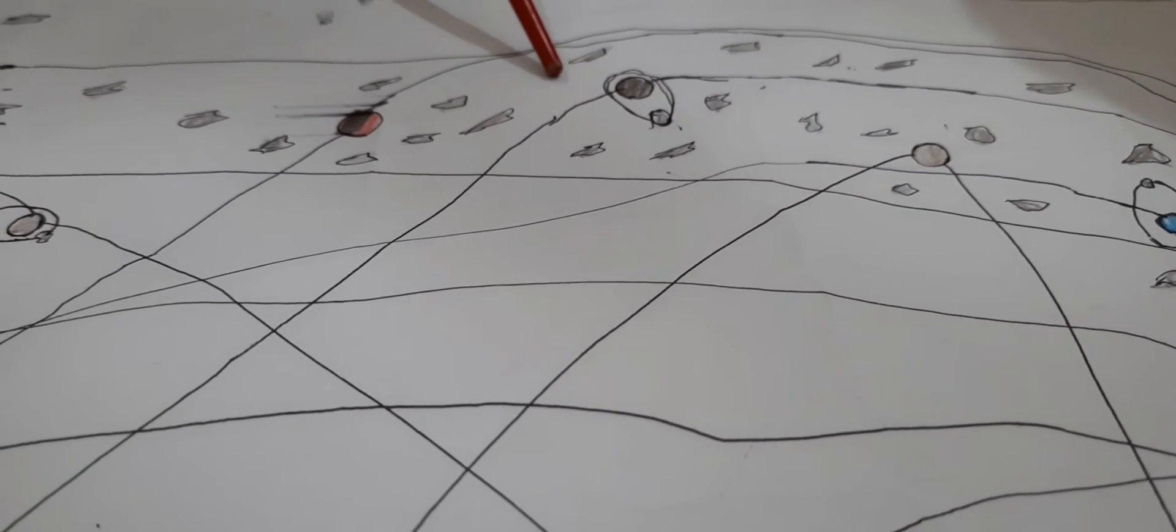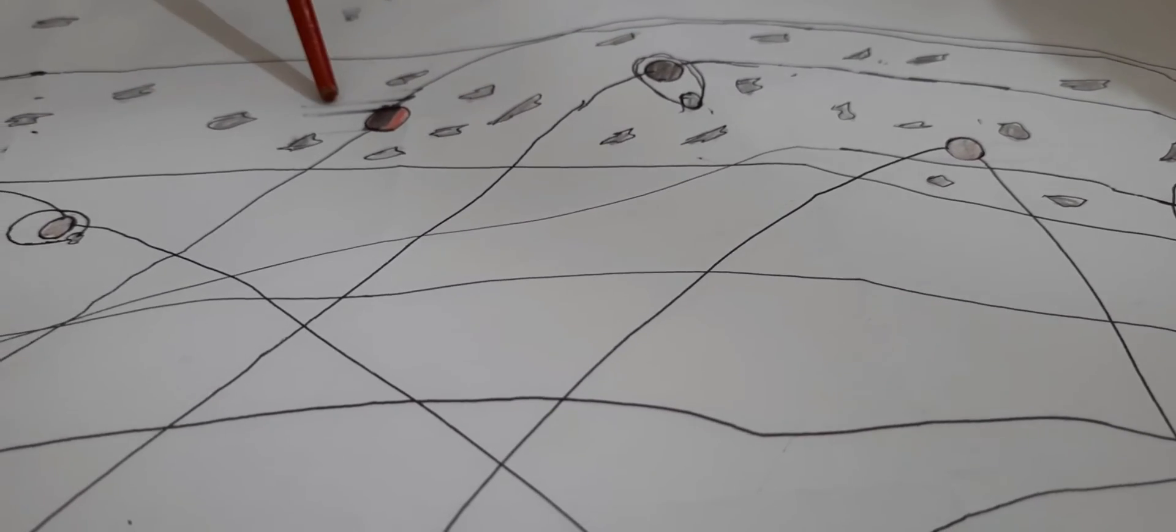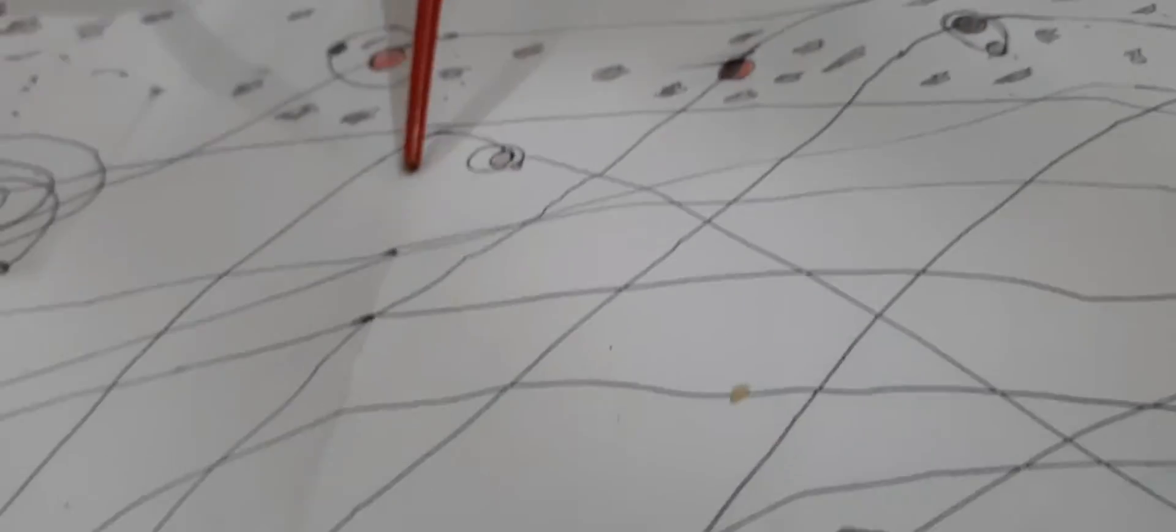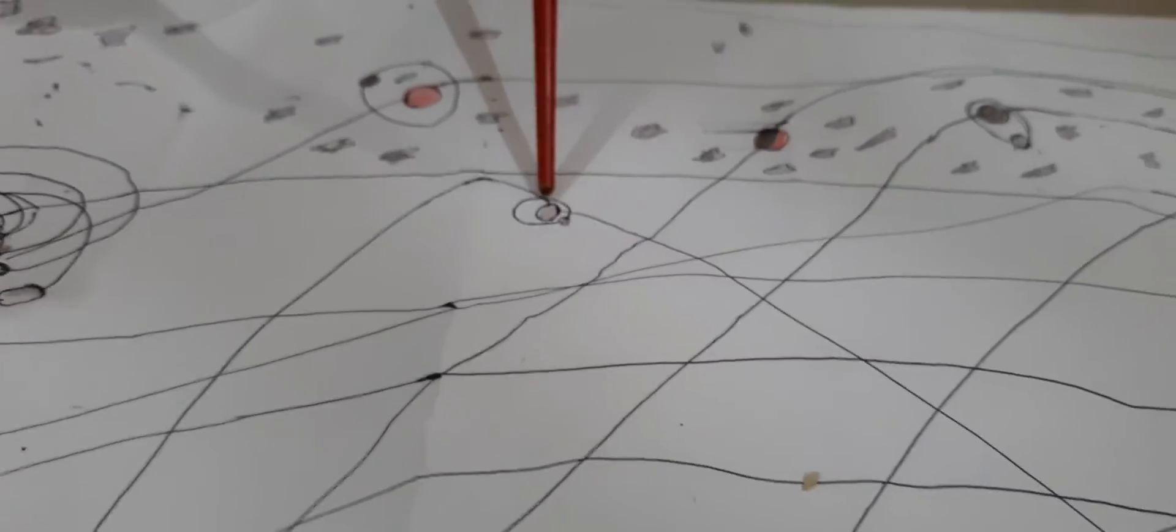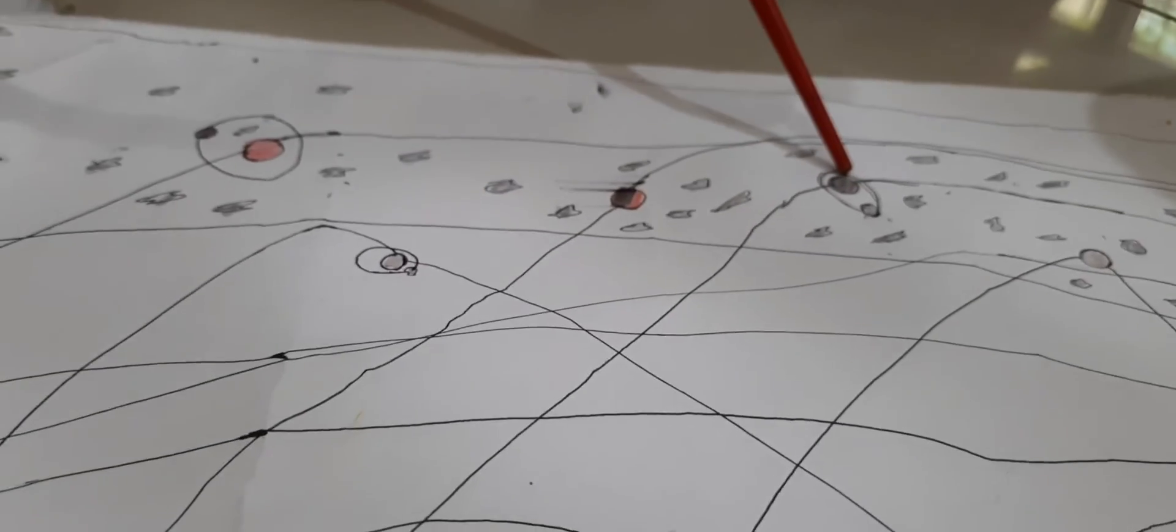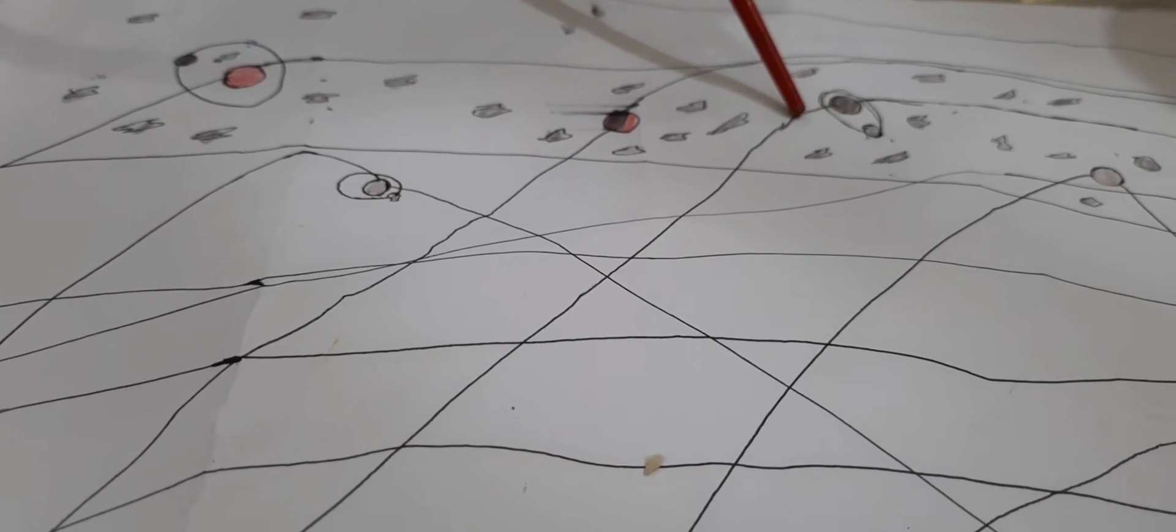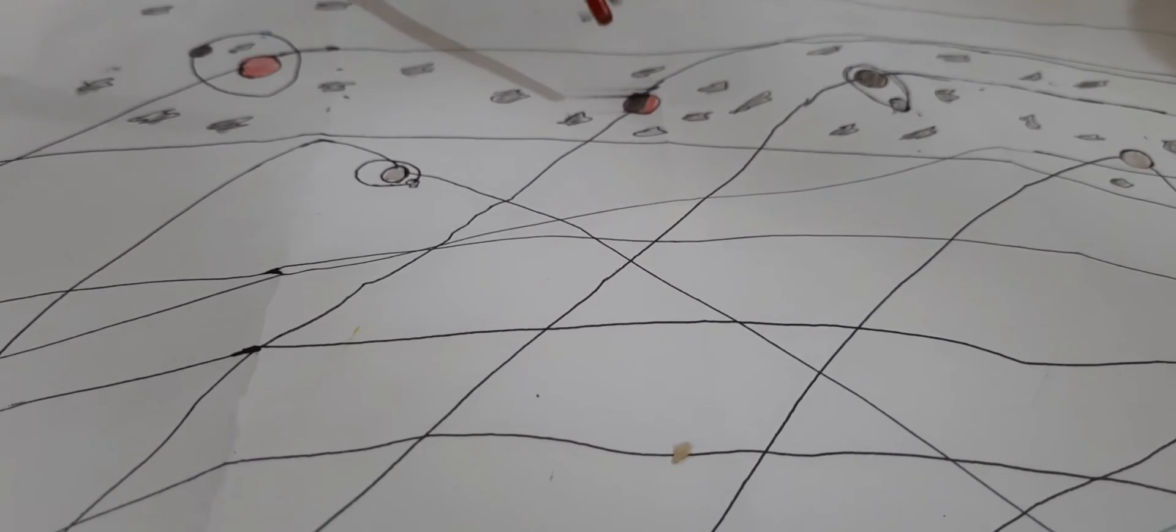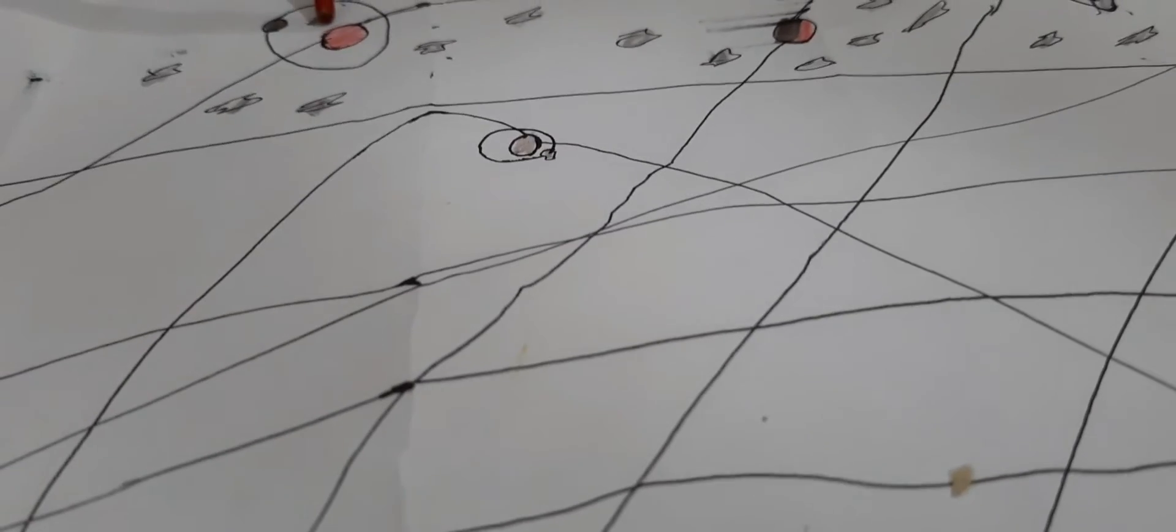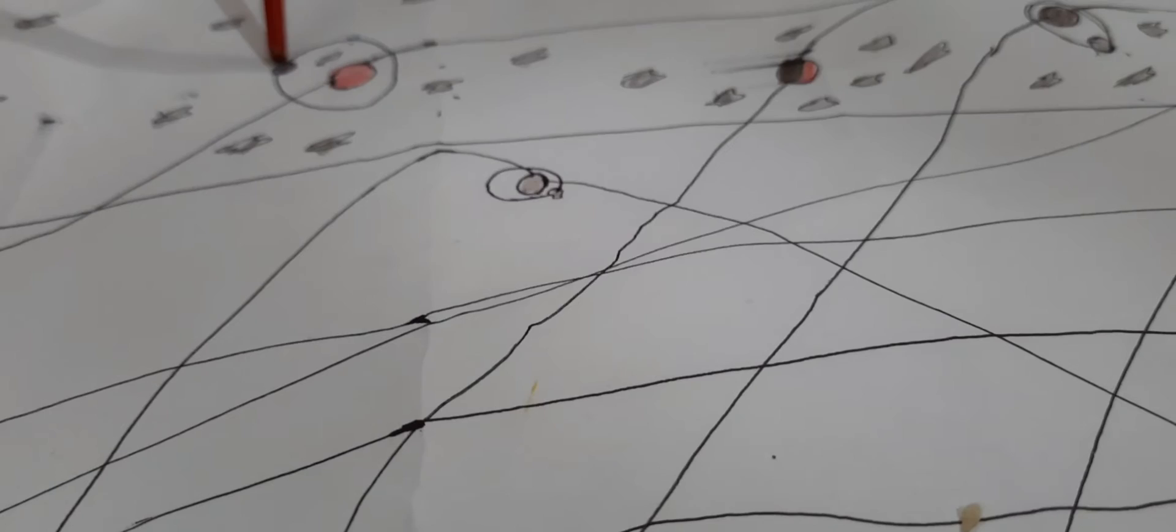Here's Quaoar. Quaoar has Weywot. This is Sedna. It has no moons. This is Salacia. Salacia has one moon, Actaea. And Sedna doesn't have any moon. But this is Gonggong. It has one moon, Xiangliu. Weird name.